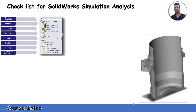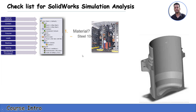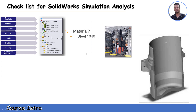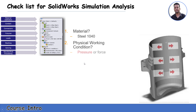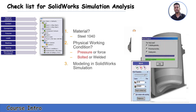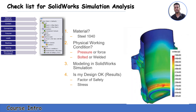Here is the checklist for SOLIDWORKS simulation. First, define your material, such as steel 2040. Then ask yourself what the physical working conditions are, like pressure or force, bolted or welded. Then model your geometry in SOLIDWORKS simulation to get results like stresses, and ask whether your design is safe with a factor of safety greater than one, or if it needs optimization.